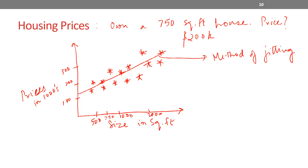We learn more about regression in the coming lectures. Based on this fitted line, I can tell wherever 750 square feet lies — which is somewhere around 180k — and that would be my prediction. This gives you an overview of how regression works, and this is a type of supervised learning.